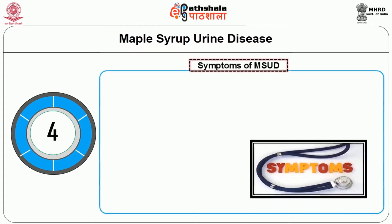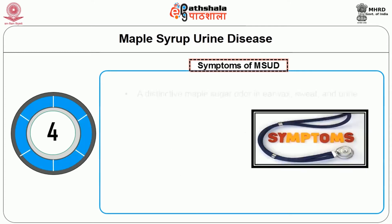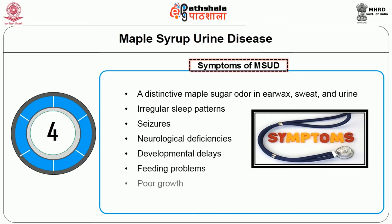Symptoms of MSUD may vary by subtype. In classic MSUD, symptoms become present in an infant within a few days after birth, usually triggered when the infant's body begins processing protein from feedings. Symptoms include lethargy, weight loss, weak sucking ability, a distinctive maple sugar odor in earwax, sweat and urine, irregular sleep patterns, seizures, neurological deficiencies, developmental delays, feeding problems and poor growth.